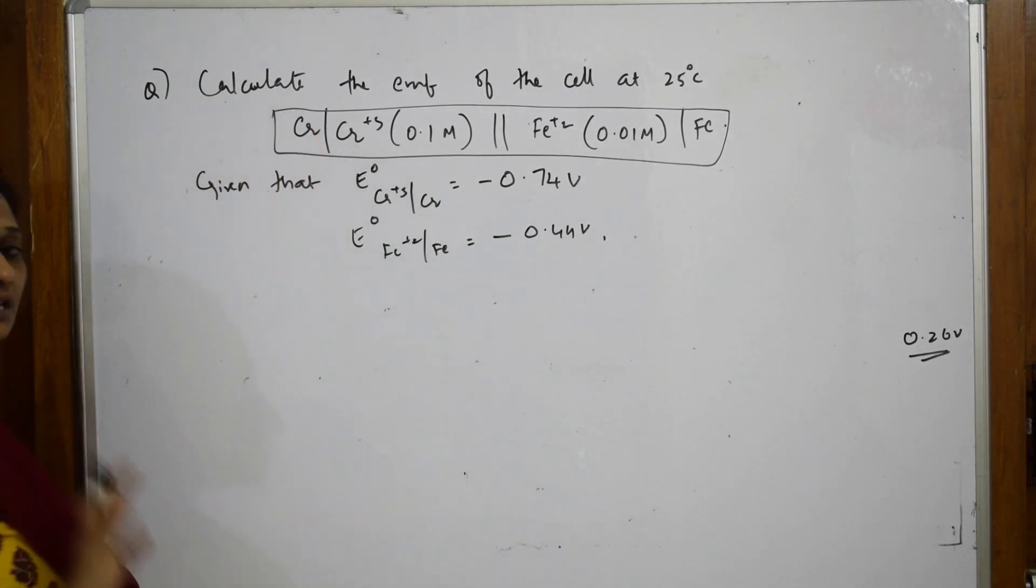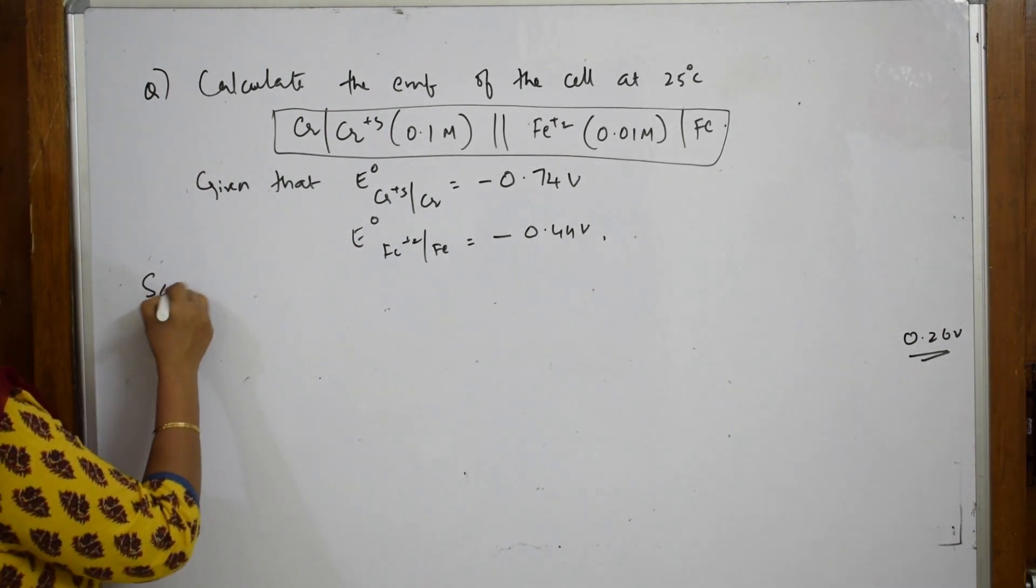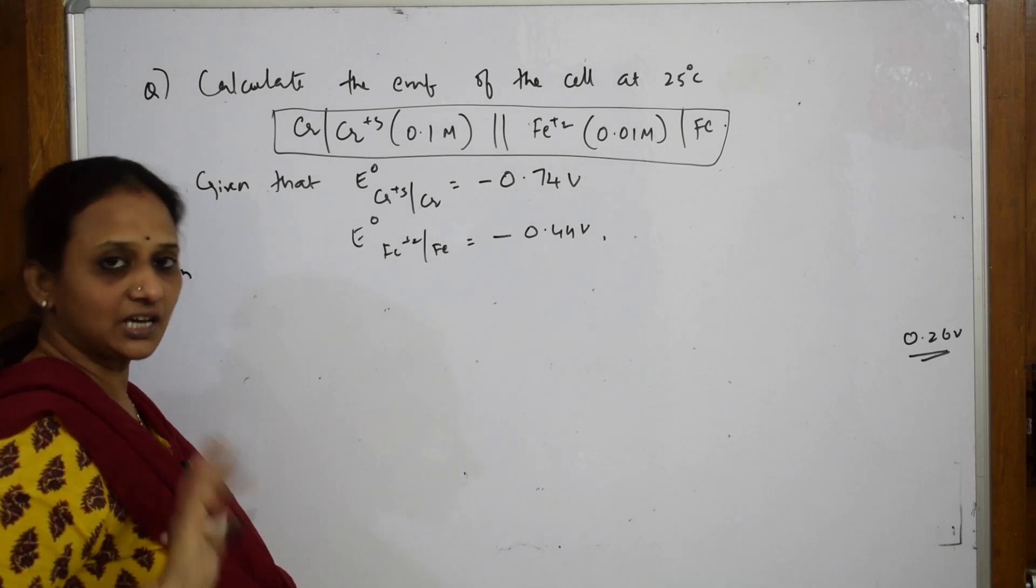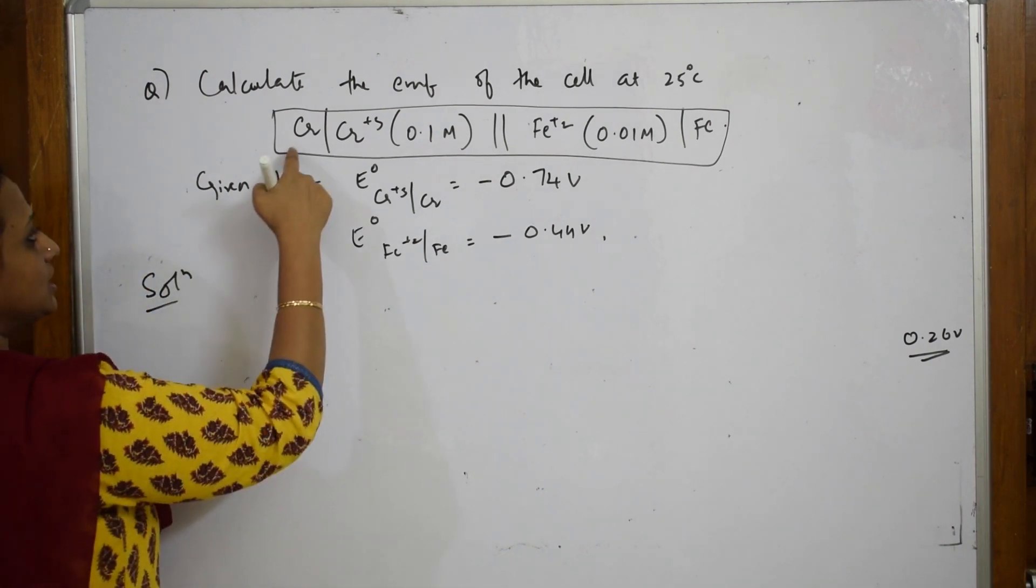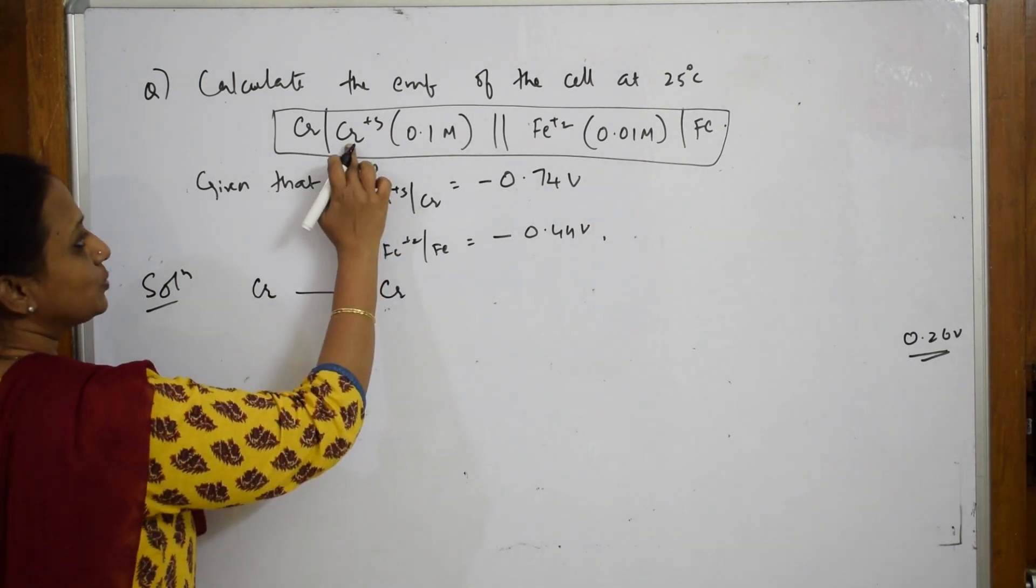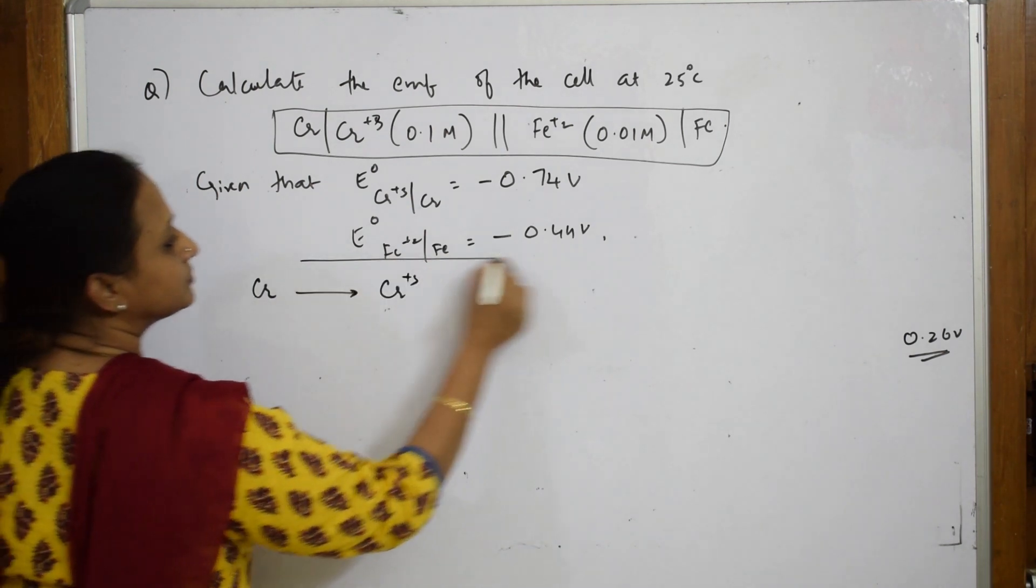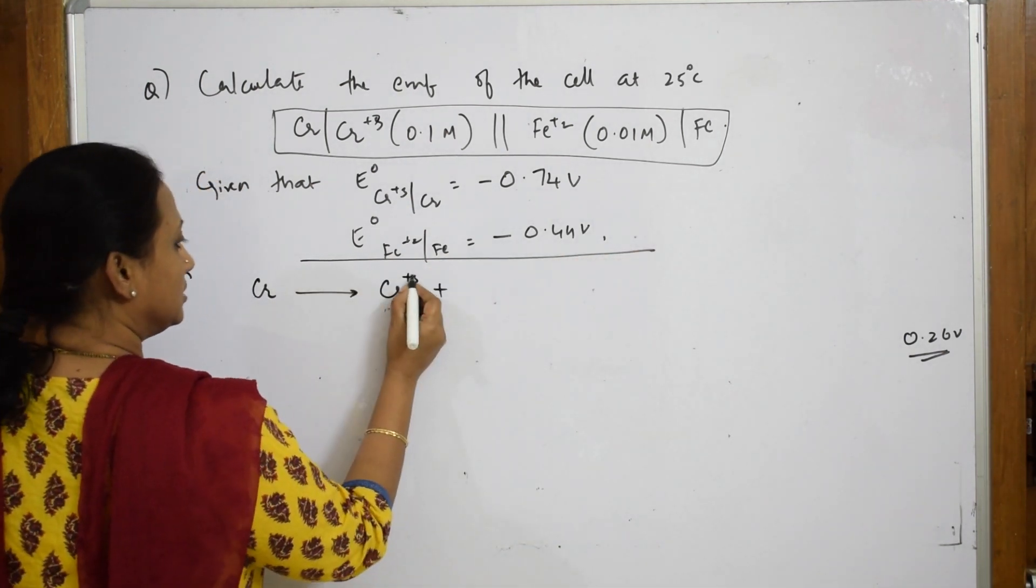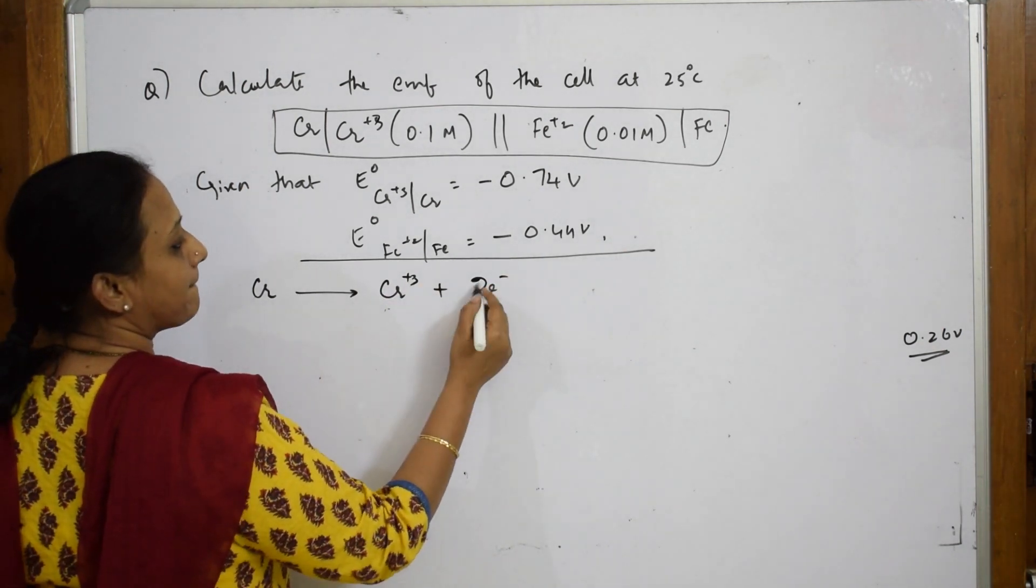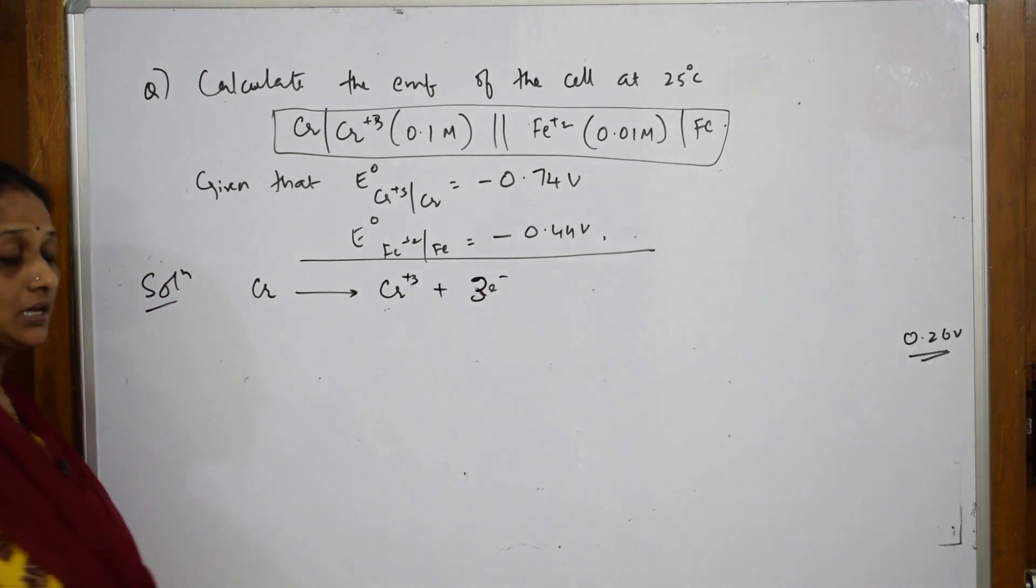First, write the balanced equation. When such a question is given, write the anodic half-cell reaction and cathodic reaction. Start with chromium: Cr → Cr³⁺. Since the oxidation state is +3, three electrons are transferred. This is your oxidation half-cell reaction.